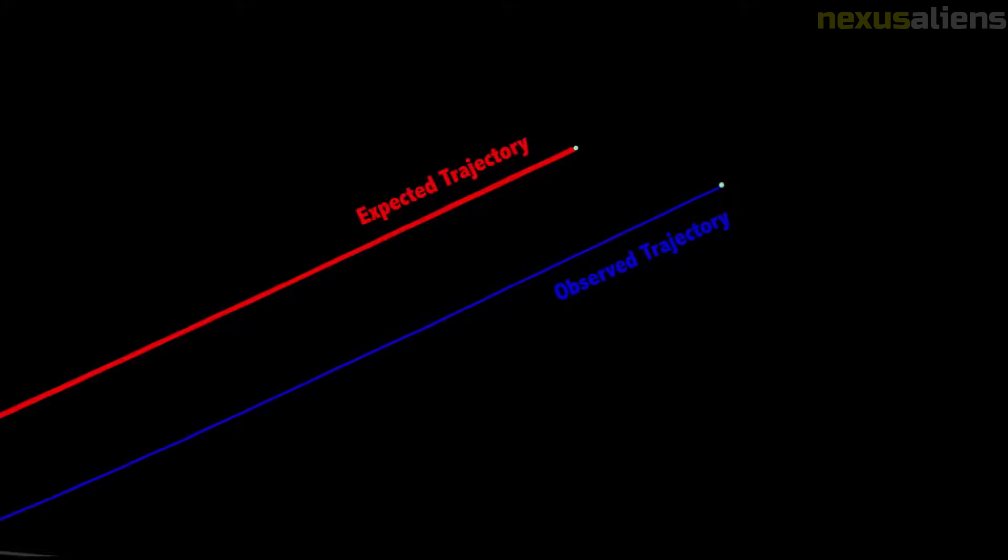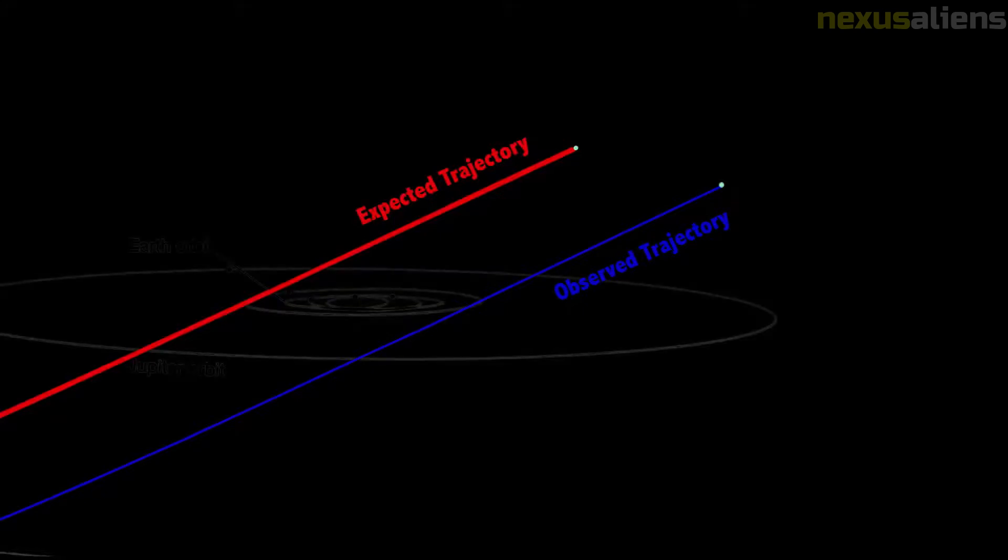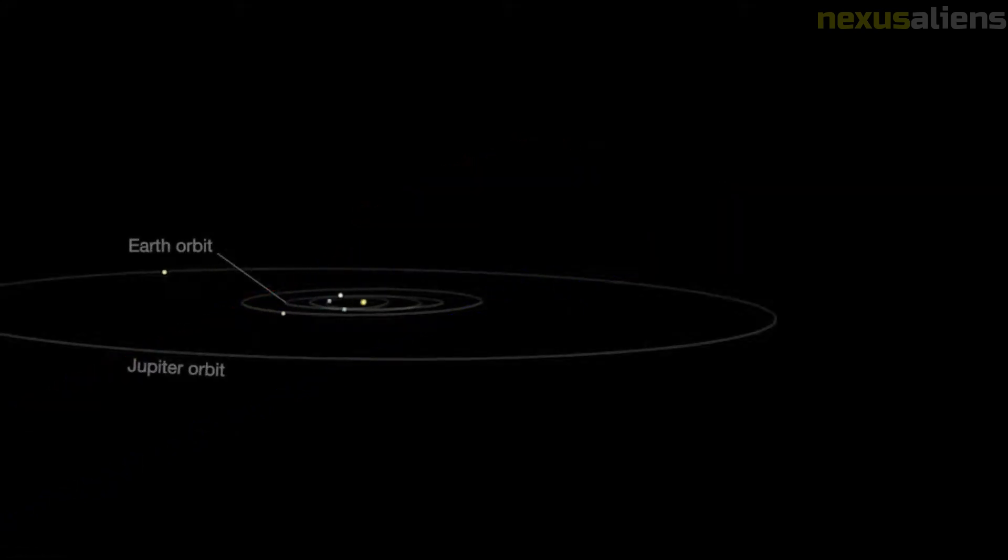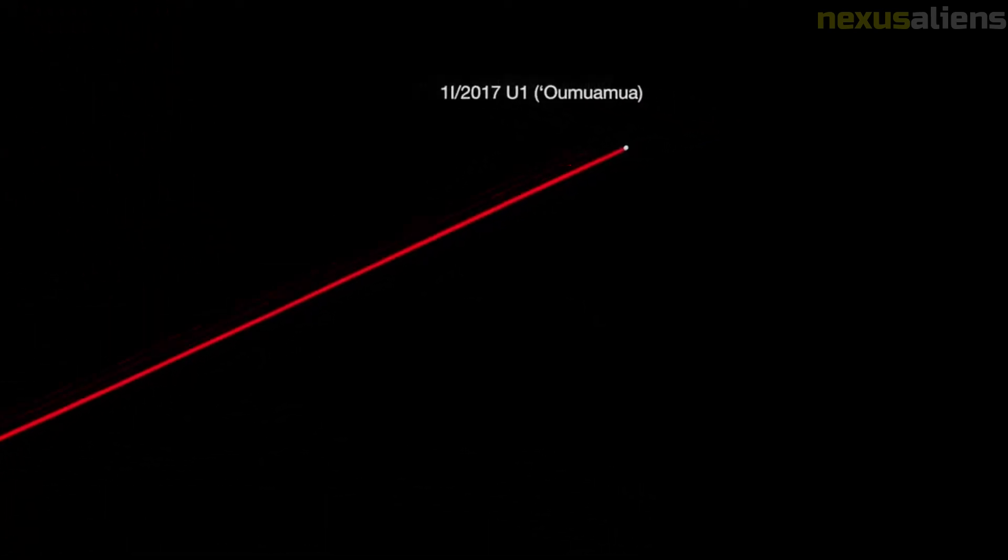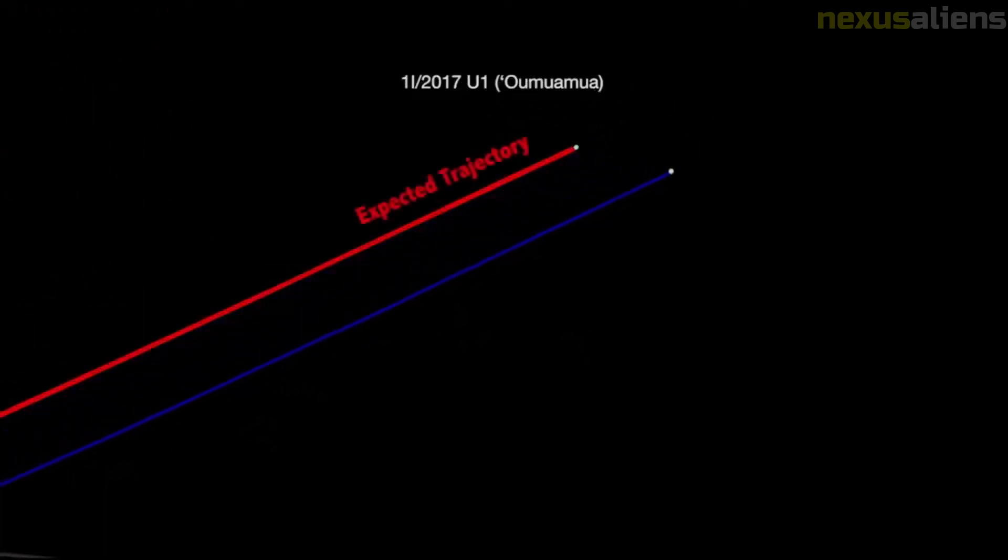A two-week observation arc had verified a strongly hyperbolic trajectory. It has a hyperbolic excess velocity of 26.33 kilometers per second, its speed relative to the sun when in interstellar space. By mid-November, astronomers were certain that it was an interstellar object.